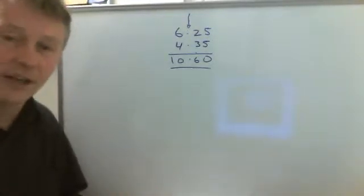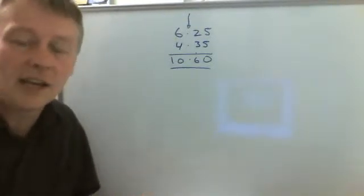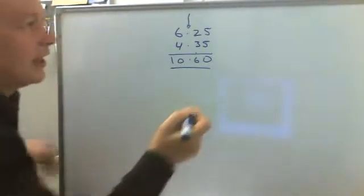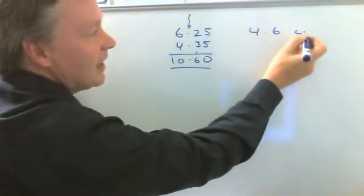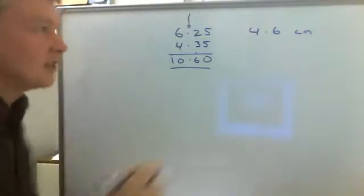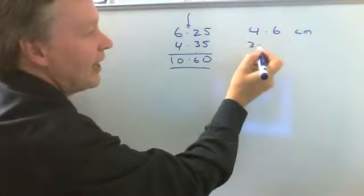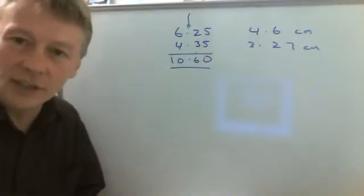So there's a couple of things with that. Sometimes decimals are presented to you as, say, a length. So it might be four point six centimeters, and I want to add that to three point two seven centimeters.